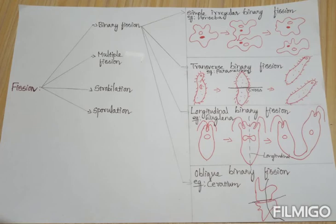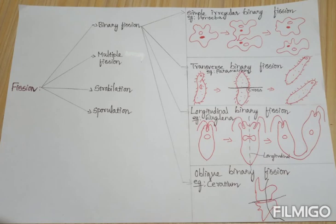In this video, we learned about fission and its types. One type of fission is binary fission, which is divided into four types: simple irregular binary fission, seen in irregular shaped organisms; transverse binary fission, where the plane of division runs along the transverse axis; longitudinal binary fission, where division occurs along the longitudinal axis; and oblique binary fission, where the plane of division is oblique.